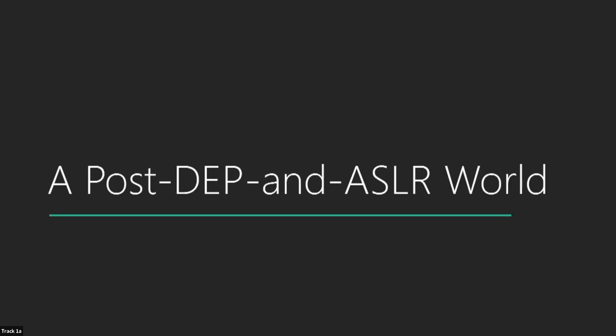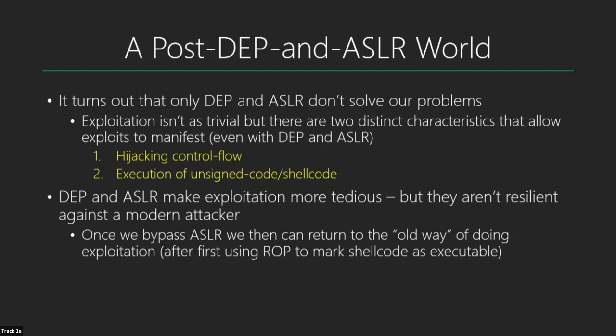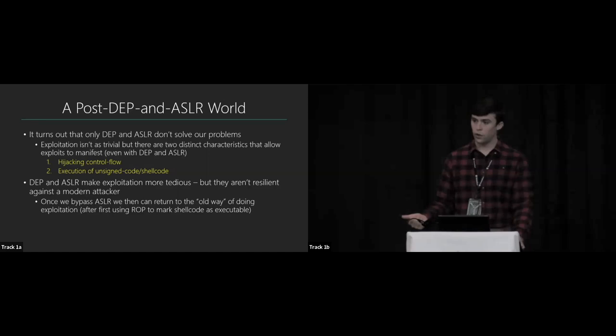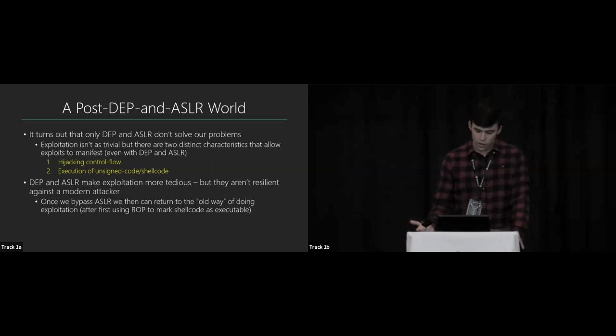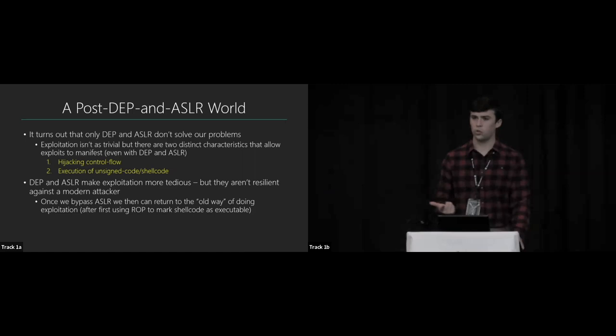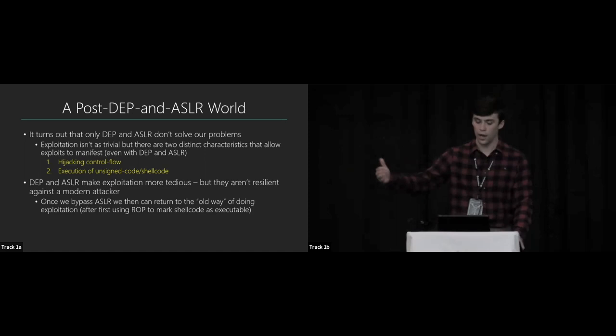DEP and ASLR do a lot, but they don't solve all problems. Exploitation has two distinct characteristics that allow it to work. The first is hijacking control flow — our stack overflow relied on corrupting a return address, which redirected execution elsewhere. The second is executing some kind of shellcode. DEP and ASLR make it more difficult, but if we can de-randomize memory we can use a ROP chain to mark the stack as executable and still violate the tenet of executing unsigned shellcode.